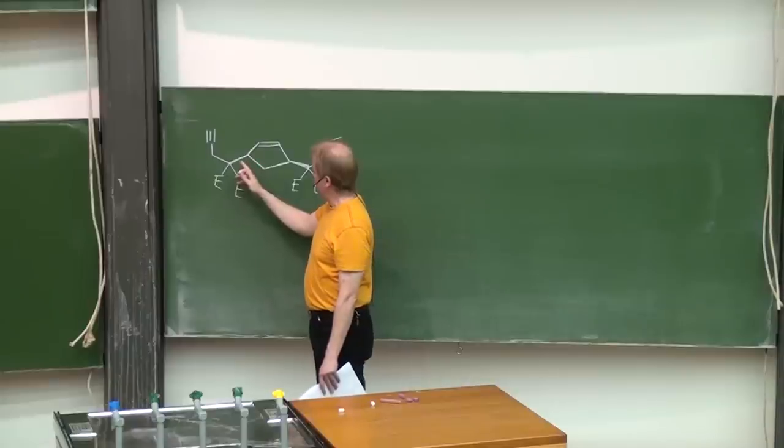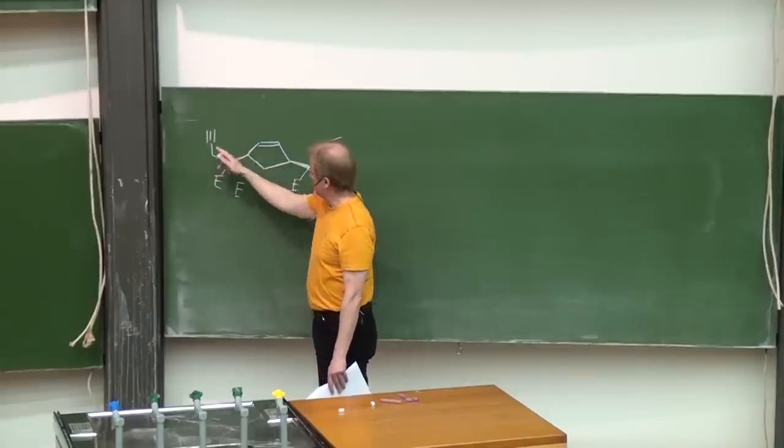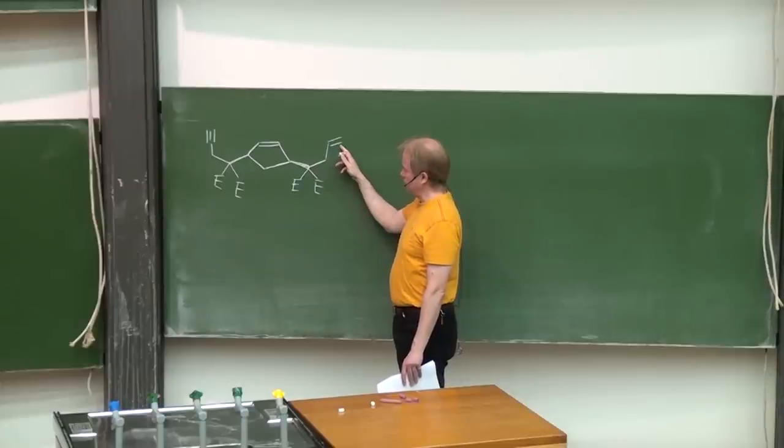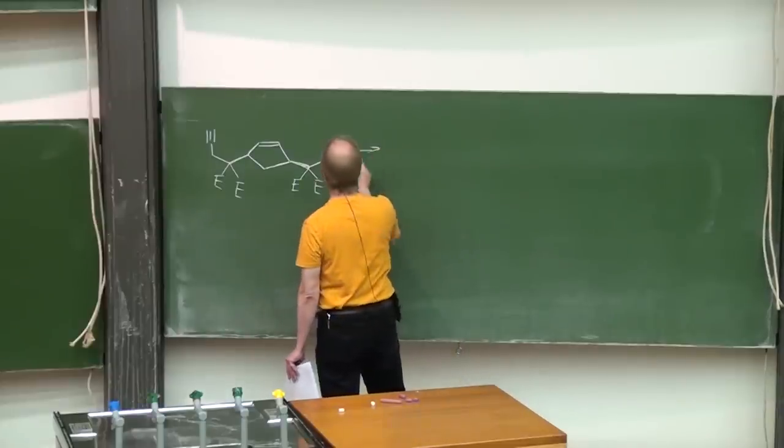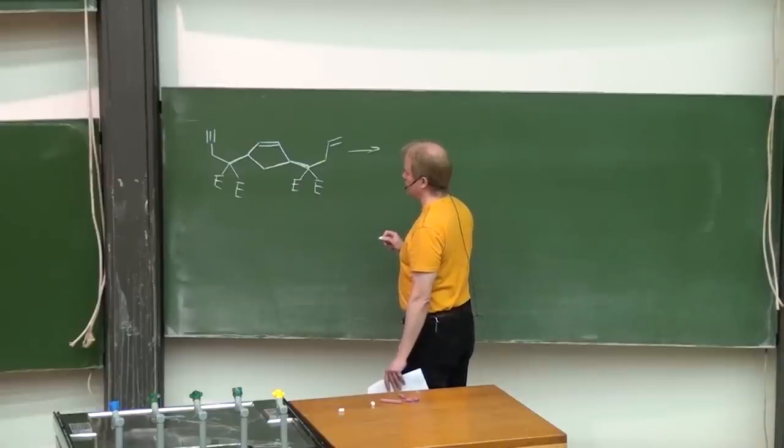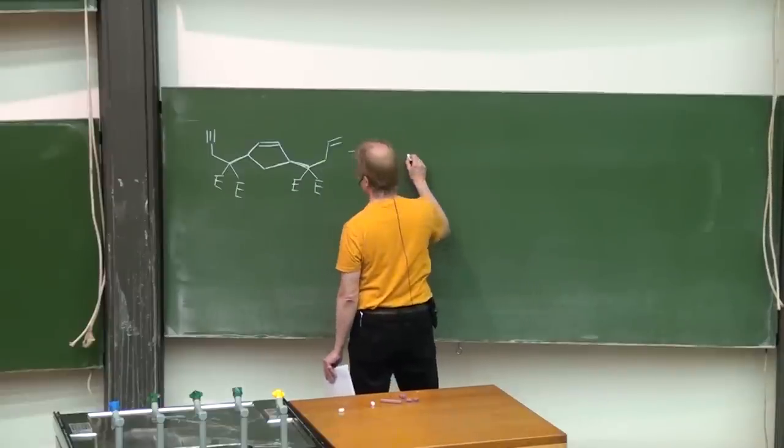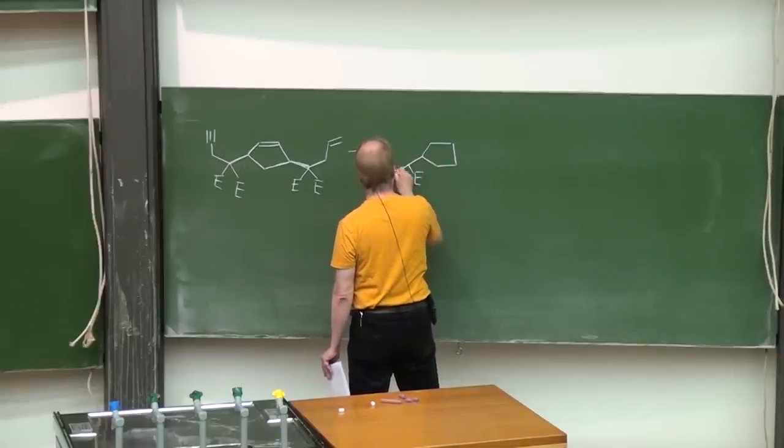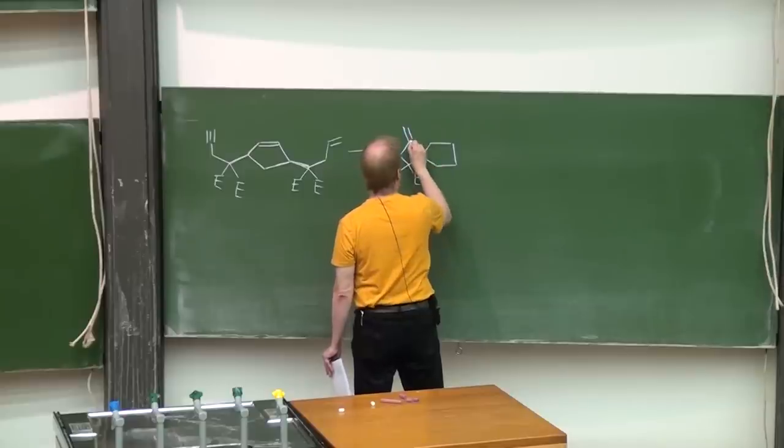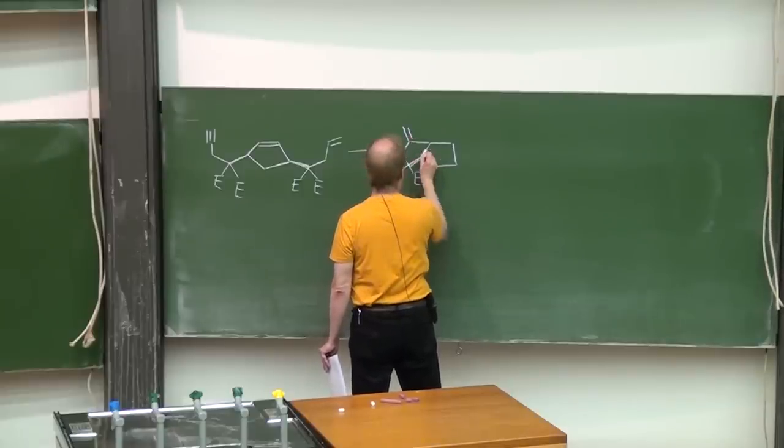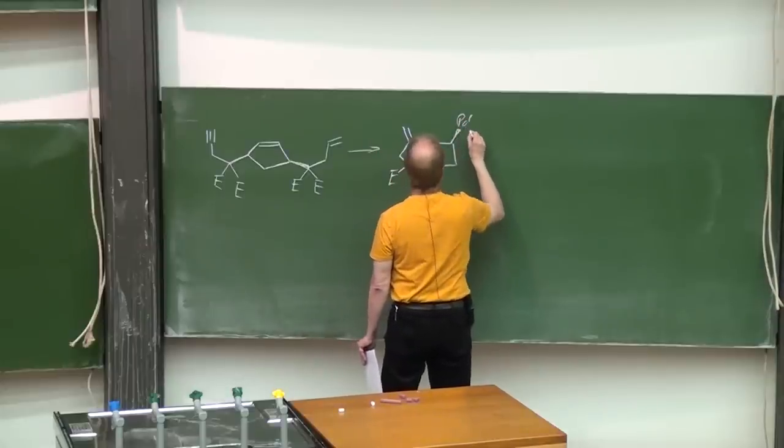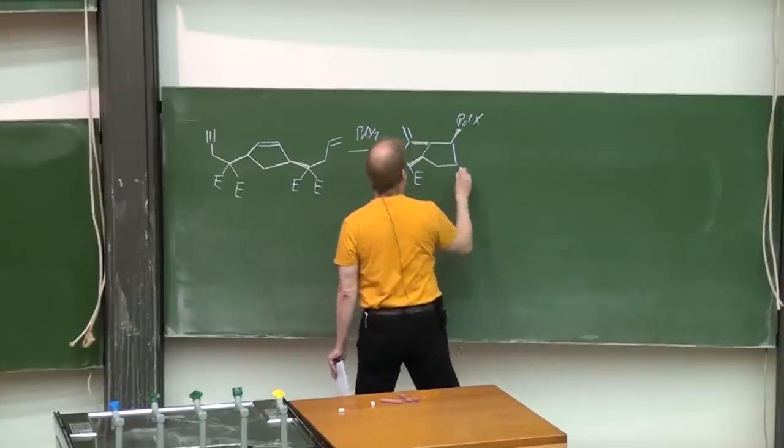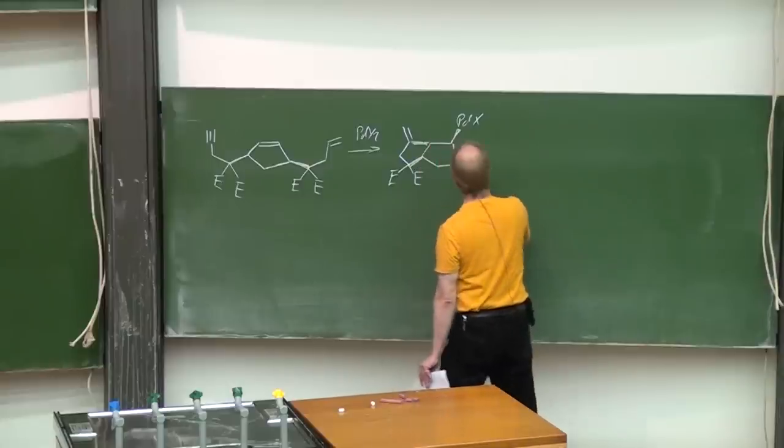So all we need for the enyne cyclization is this moiety, but now we have an additional olefinic functional group here. And the enyne cyclization will produce this intermediary palladium(II) complex with no beta-hydrogen.